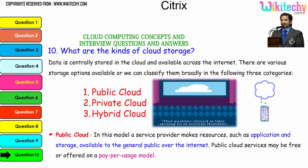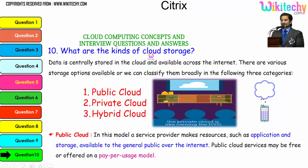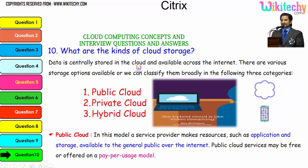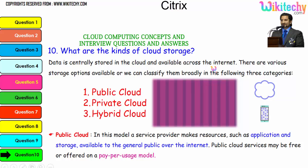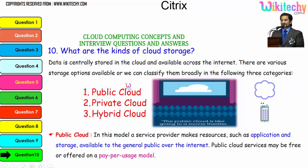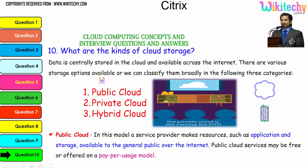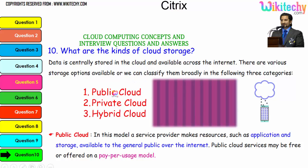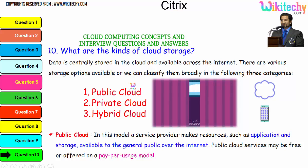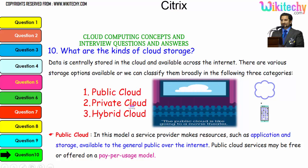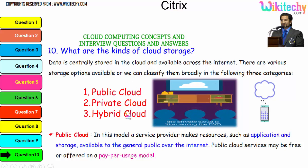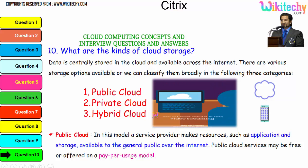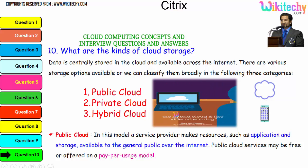Now let's talk about the kinds of cloud storage. Data is centrally stored in the cloud and available across the internet. There are three major storage options, broadly classified into three categories: public cloud, private cloud, and hybrid cloud.